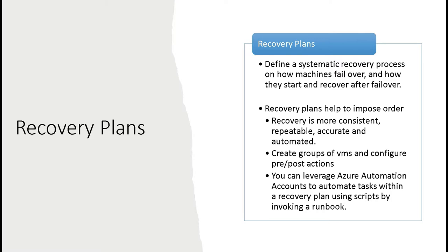Let's talk about recovery plans. Although you can trigger failovers with individual VMs, you can use something more effective to orchestrate the deployment — like recovery plans. Recovery plans allow you to define a systematic recovery process on how machines fail over and how they start and recover after failover. They help you impose order and be more consistent and repeatable. You can create groups of VMs, create pre-imposed actions, and you can use recovery plans to call automation runbooks to deploy additional resources, like we're going to do today.